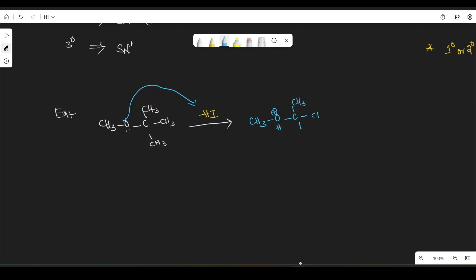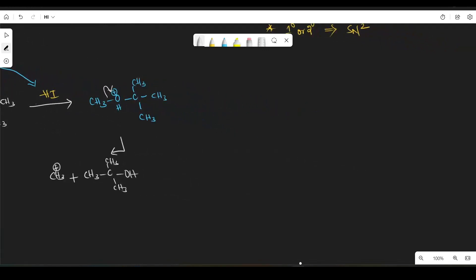So now let me write two cases here, just try to break this bond like this. Now we get this CH3+ plus CH3-CH3-CH3-OH right, and now here if you break this bond, then we will get CH3-OH plus C with three CH3 groups.